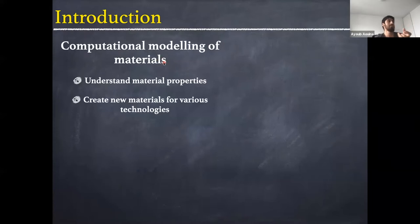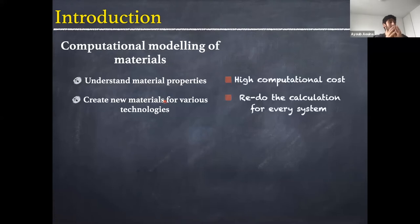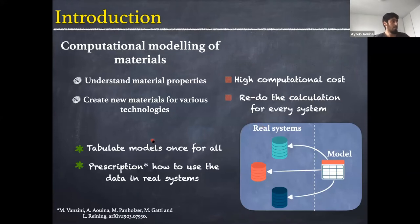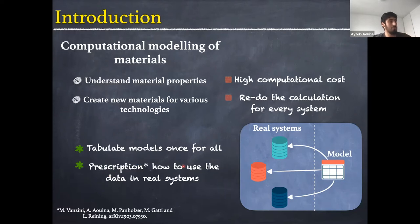The computational modeling of materials is a powerful tool to understand their properties and also to create new materials for various technologies. But the problem is that it involves calculations with high computational cost, and we need to redo the calculation for every system, which is expensive. Our solution is to tabulate models once for all. Generally, the models are simple systems where we can do the calculations, and then we give a prescription for how to use the data of the model in real systems. We call it the connector approach.